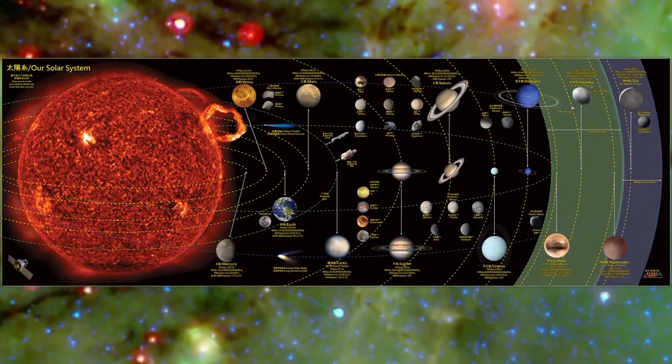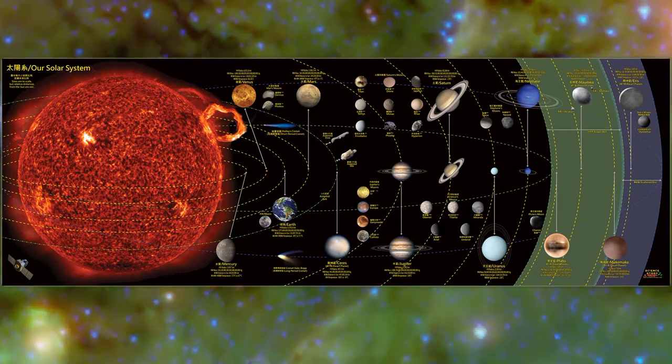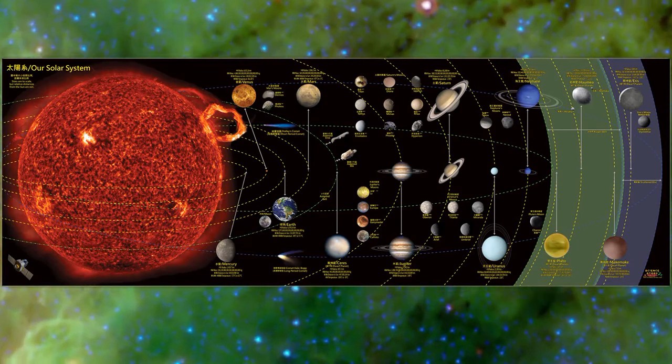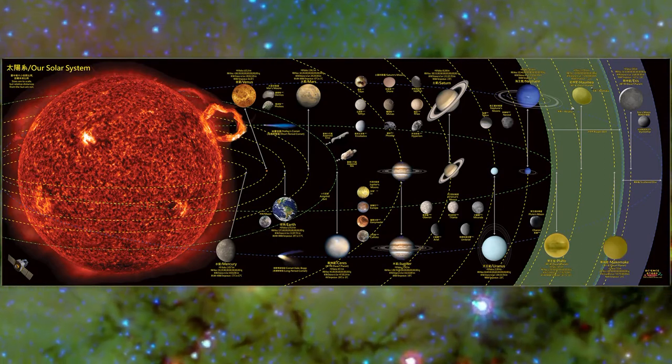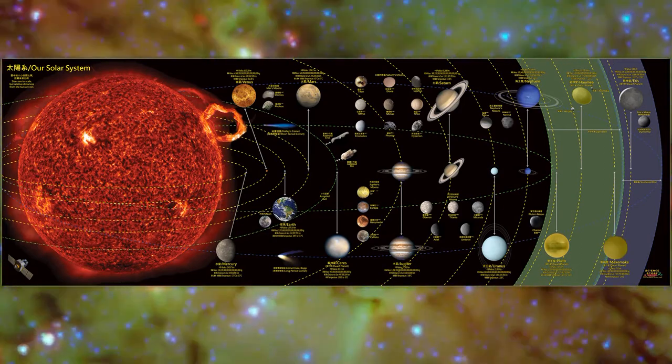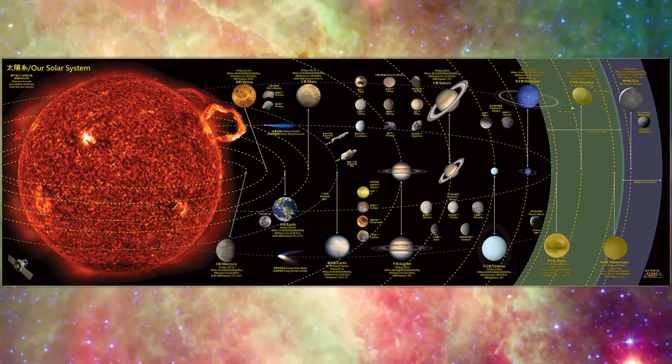The Kuiper Belt is home to at least three dwarf planets: Pluto, Haumea, and Makemake. The Kuiper Belt was discovered in 1992.